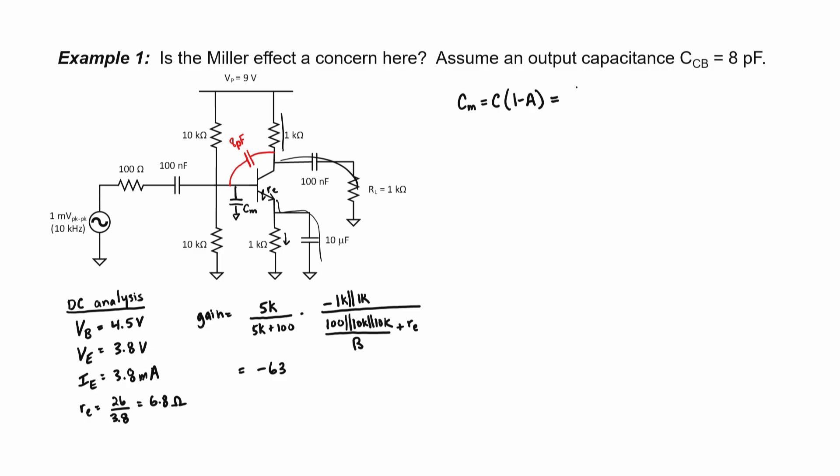We just calculated that the Miller capacitance is C times 1 minus A. So we'll plug in 8 pF for C, and then our gain is minus 63. So let's substitute in minus 63. We wind up here with 512 pF. Not very good, is it?